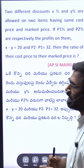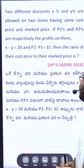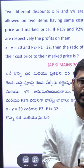Two different discounts, X% and Y%, are allowed on two items having the same cost price and market price. If P1% and P2% are respectively the profits on them, X minus Y equals 20 and P2 minus P1 equals 32, then find the ratio of their cost price to market price.